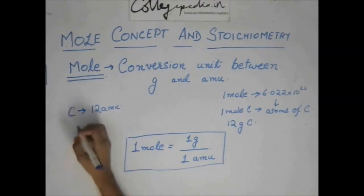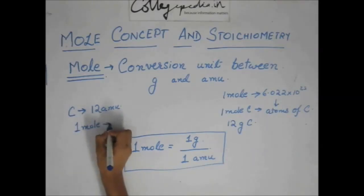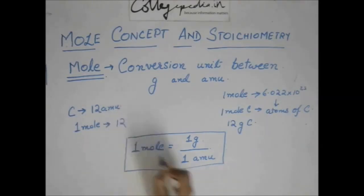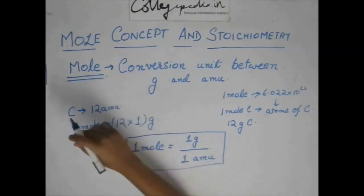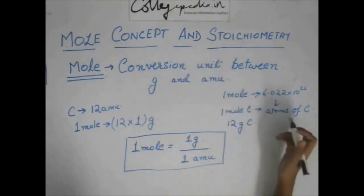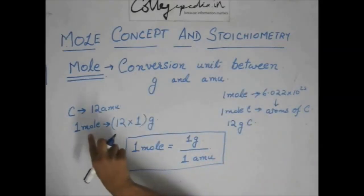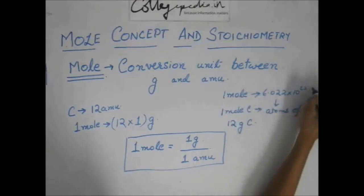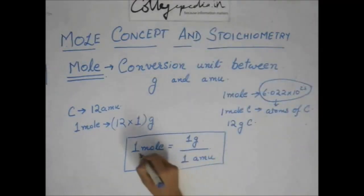Because carbon mass number is 12 amu. So, the weight of one mole of carbon would be 12 amu into 1, which gives these many grams. So, you can find out the weight of one mole of carbon, one mole of any substance. That is, this many atoms of any substance by using this conversion.